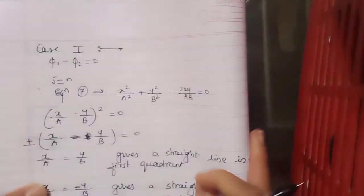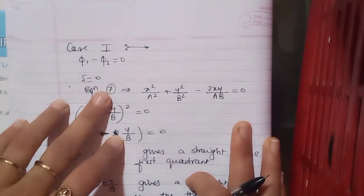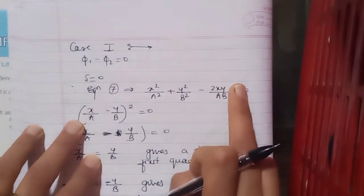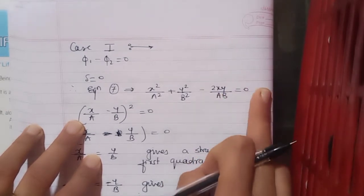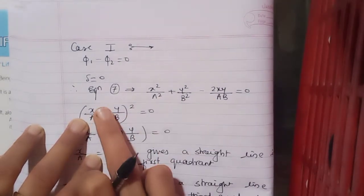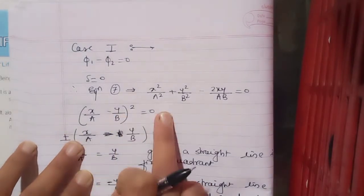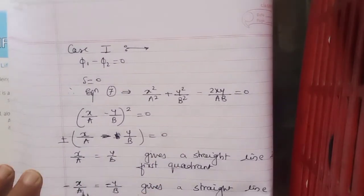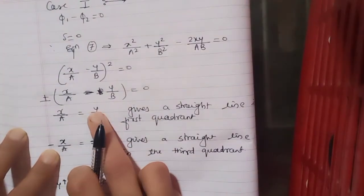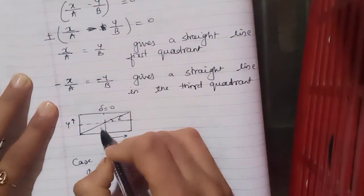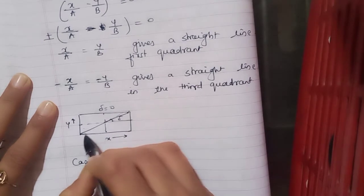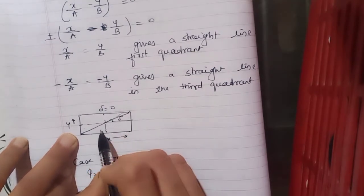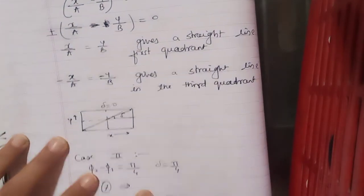Now we will see different cases. Case 1: suppose φ₁ − φ₂ = 0, so δ = 0. Substituting into equation 7: x²/a² + y²/b² − 2xy/ab = 0, because sin δ = 0 and cos δ = 1. This is the expansion of (x/a − y/b)² = 0. Taking the square root: ±(x/a − y/b) = 0, giving x/a = y/b or −x/a = −y/b. This gives a straight line in the first and third quadrant.